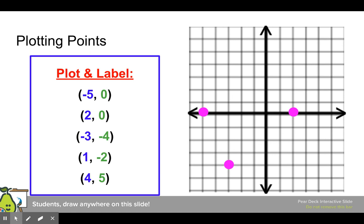1, negative 2 means right 1, down 2. 4, 5 means right 4, up 5. So these are all of our points that we're going to practice plotting and labeling.